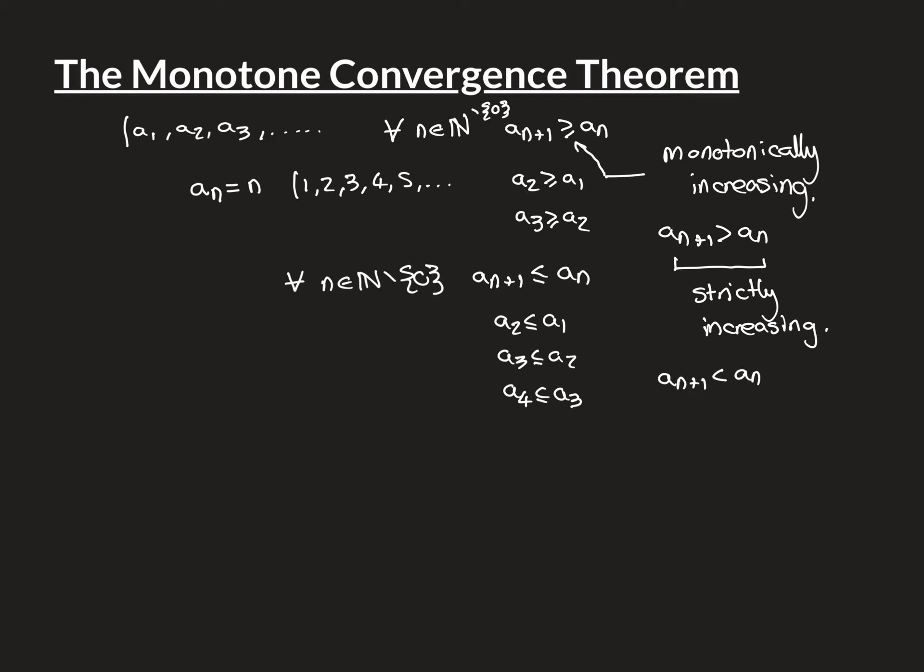Both monotonically increasing and monotonically decreasing sequences are called monotone sequences. The monotone convergence theorem has two parts — one for each type — but they are mirror images of one another. We'll state and prove it for monotonically increasing sequences; everything is just the mirror image for monotonically decreasing sequences.